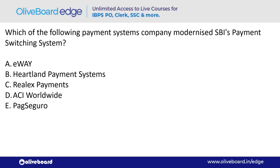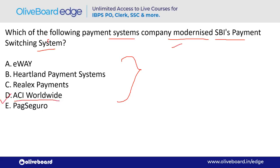Which payment system company modernized SBI's payment switching system? The answer is ACI Worldwide — option D.